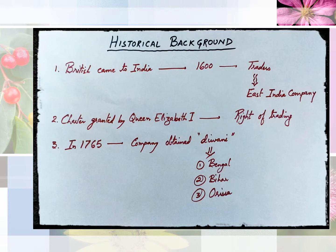In the historical background, we will see how the constitution was formed and the laws which were established that helped form the constitution. We will go to the Rigvedas, Mauryan period, Gupta period and Mughal period. In these periods, was there a constitution? The answer is no.